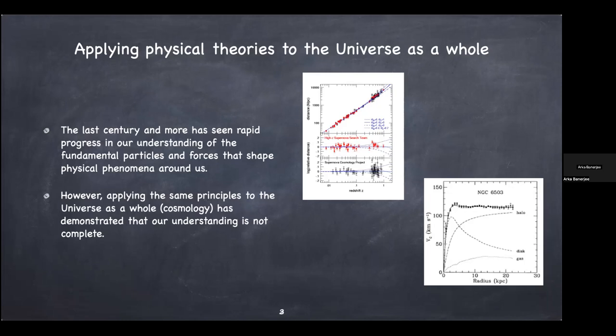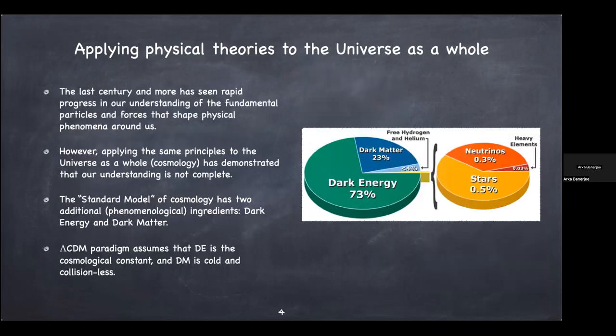We don't yet know in what way our understanding is incomplete, so we want to probe this further. Over the years, people have come up with what is known as the standard model of cosmology. Apart from the physics that we know, it has two additional phenomenological ingredients: dark matter and dark energy. Dark energy actually makes up most of the energy budget of our universe — 73% of the energy density.